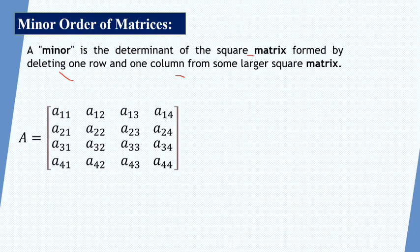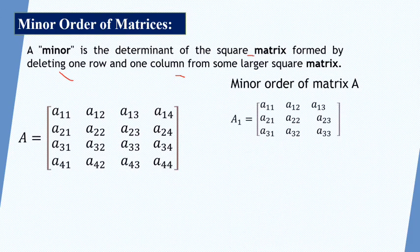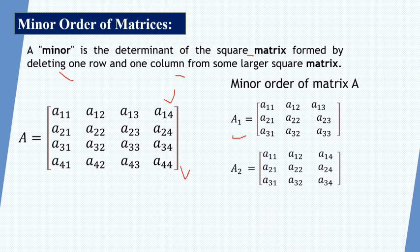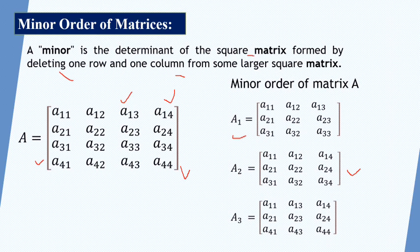If we have a 4 by 4 matrix, a minor of order 3 can be formed as: a11, a12, a13, a21, a22, a23, a31, a32, a33 — by deleting the last row and last column. Or, deleting the last column and last row differently, we get a11, a12, a14, a21, a22, a24, a31, a32, a34. Or if we delete the third row and second column, another 3x3 minor is formed.